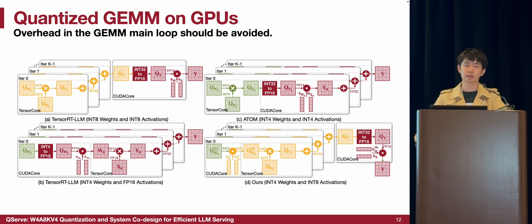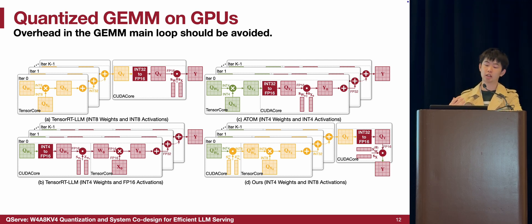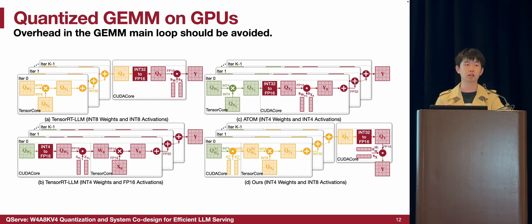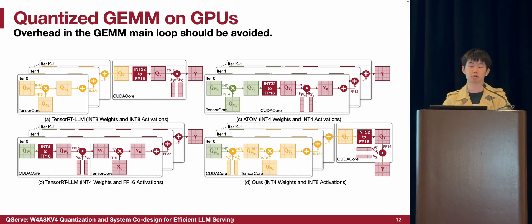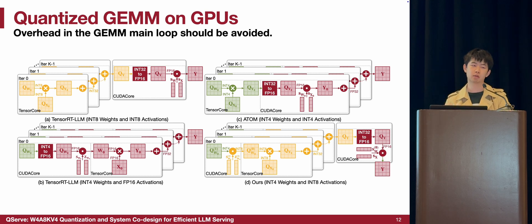Now let's dive deeper into the system design of the QServe GEMM kernel. State-of-the-art systems typically implement a tensor core GEMM with all computation in the main loop, as shown in the figure. For FP16 and W8A8, the main loop is executed entirely on tensor cores without any extra overhead like dequantization or scaling, and all dequantization overheads are moved to the epilogue for efficiency. However, other quantized GEMMs such as W4A16 and W4A4 require dequantization operations in the main loop executed on the slower CUDA core. For example, W4A16 needs dequantization of weights from 4-bit to FP16, and W4A4 needs dequantization, scaling, and accumulation of partial sums, which introduces overhead and adds register pressure.